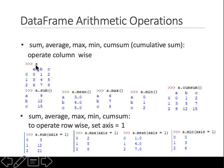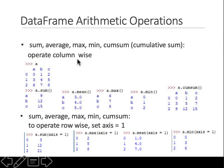If you have a DataFrame and call .sum(), it gives you the sum of all columns — these functions operate column-wise. Similarly, .mean(), .max(), .min(), and .cumsum() all work on columns by default. If you want to operate on rows instead, provide the argument axis=1. For example, axis=1 sums each row: 2+1=3, 8+7=15, 15+6=21.